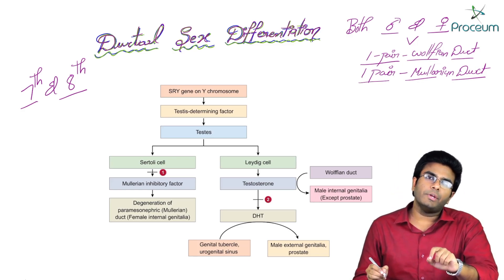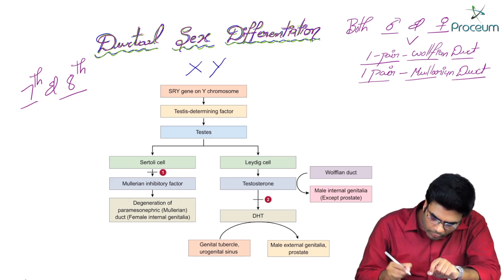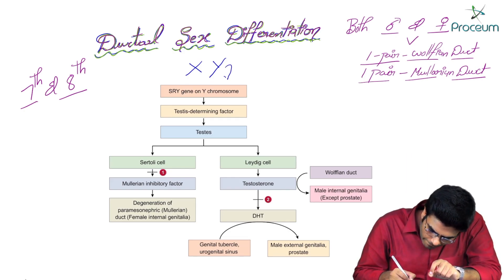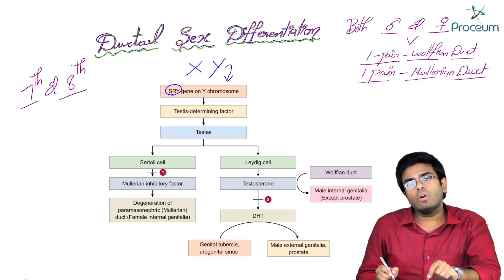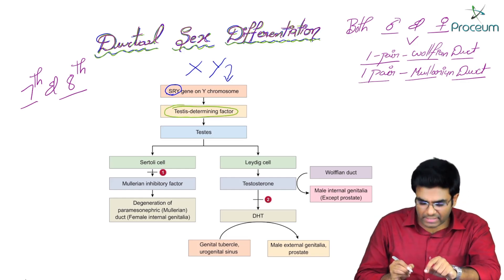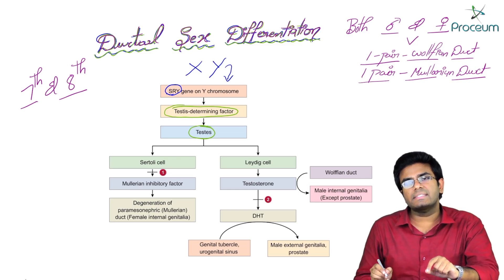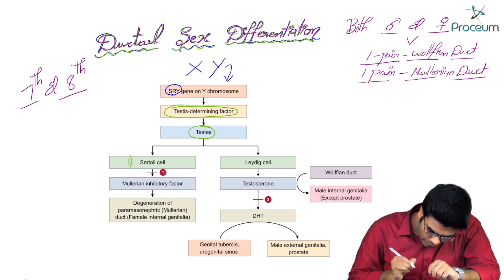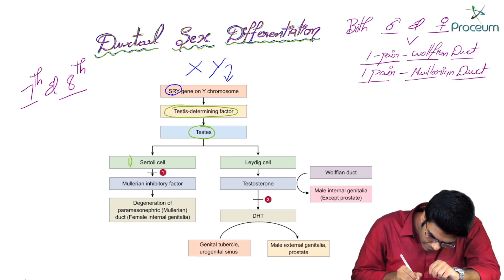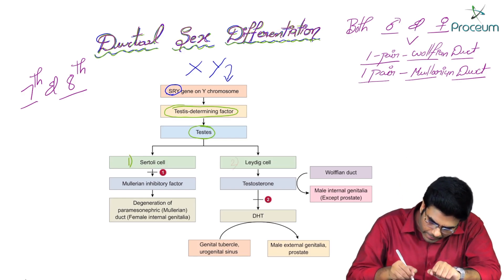If it's a male embryo, it will have X chromosome and Y chromosome. On the Y chromosome there is the SRY gene, which codes for a transcription factor known as Testis Determining Factor. This Testis Determining Factor helps in the formation of the testis, which contains two types of cells: Sertoli cells and Leydig cells.